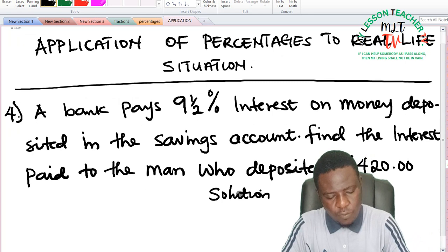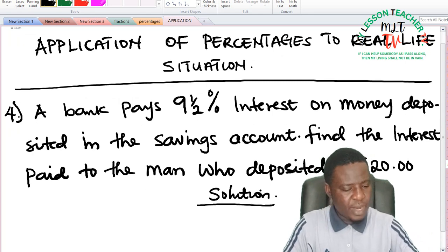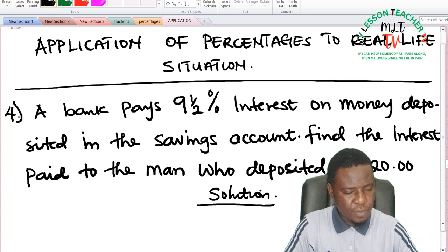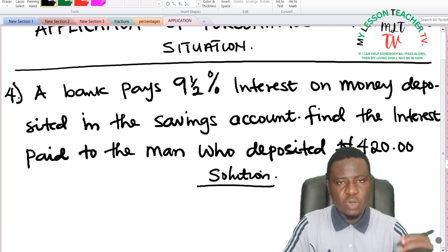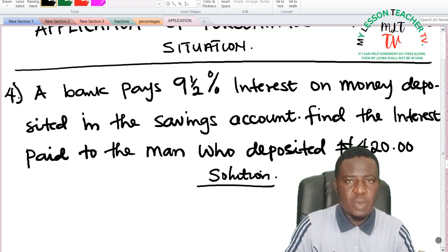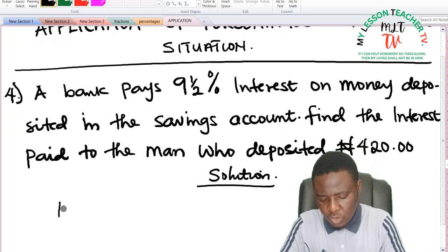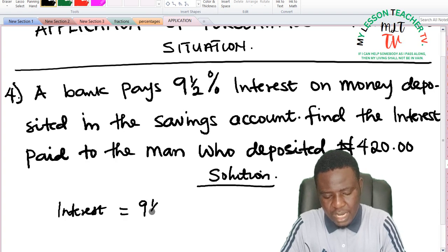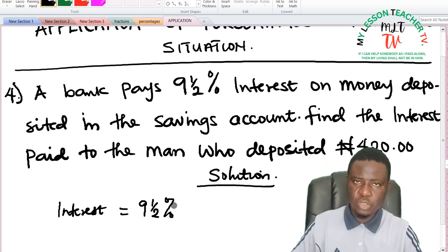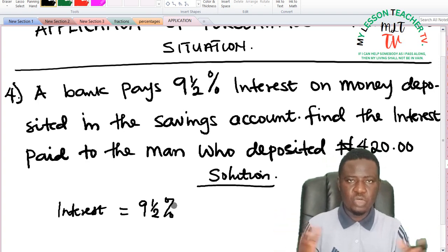Let's first of all fish out the parameters that are given from the question that will enable us understand or that will enable us know how to manipulate the question effectively. So the interest is said to be equal to nine and a half percent.